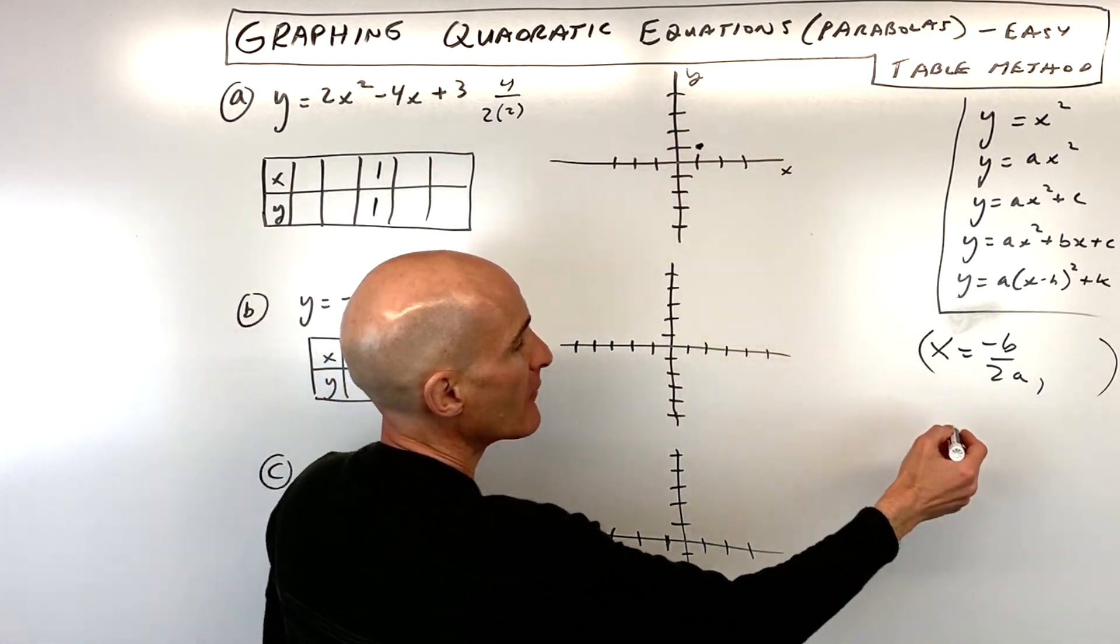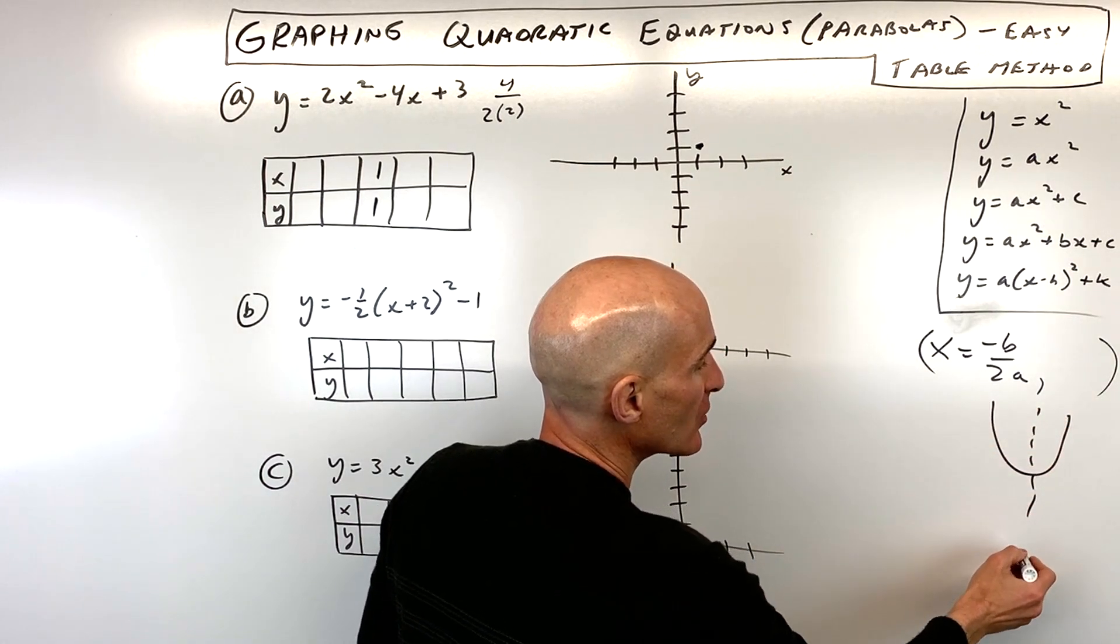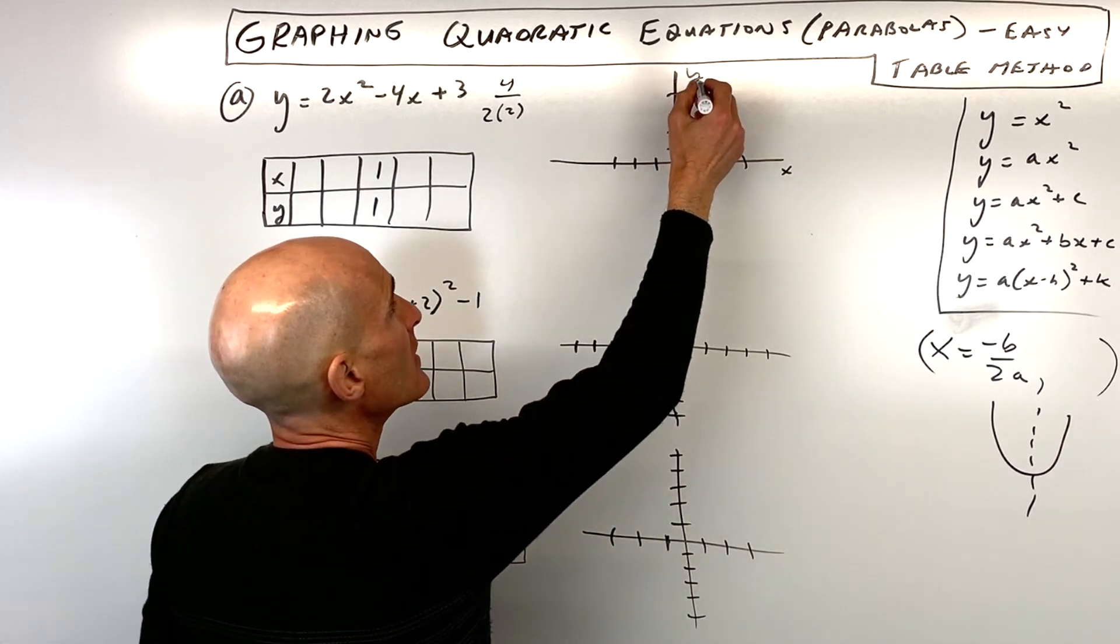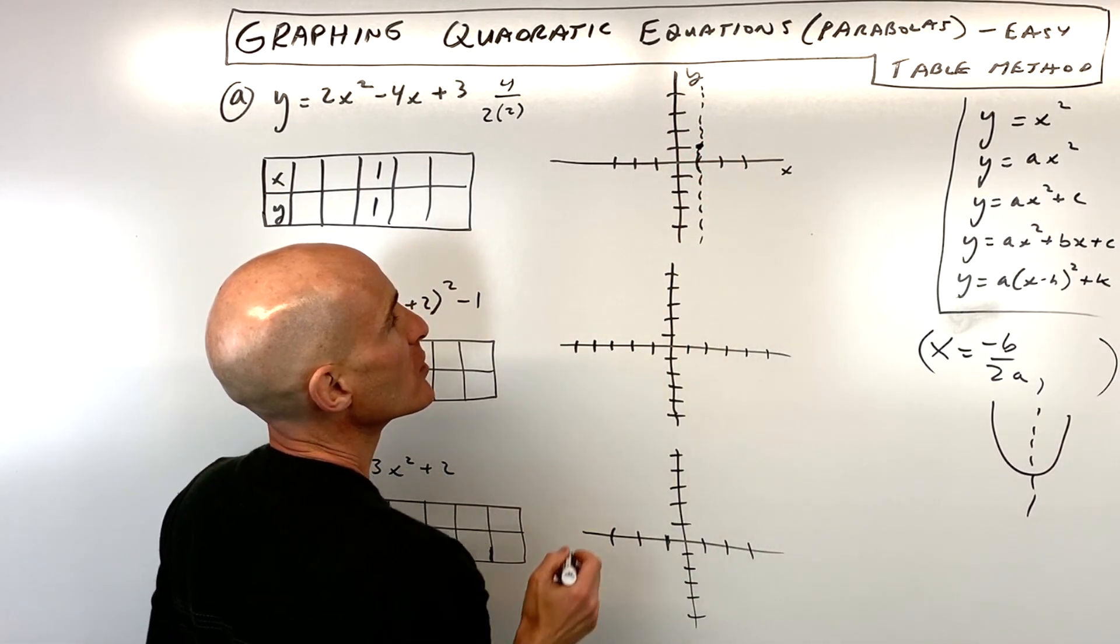Now keep in mind that when you're graphing parabolas, they're symmetric about the vertex. So if you fold it over, it's going to match with itself. So I can draw in the axis of symmetry right through that x-coordinate of the vertex.